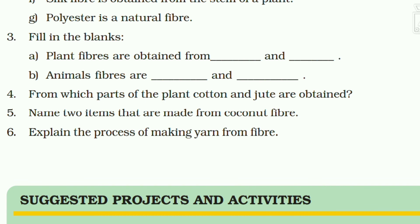Question 4: From which parts of the plant are cotton and jute obtained? Cotton is actually a fruit — it is obtained from cotton bolls, which is the fruit of the plant. Jute is obtained from the stem of the plant.